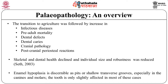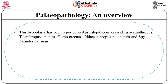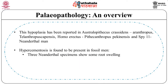Enamel hypoplasia is discernible as pits or shallow transverse grooves, especially in the canines and molars, with the tooth only slightly affected in most cases. This hypoplasia has been reported in Australopithecus crassidens, Paranthropus, Telanthropus capensis, Homo erectus, Pithecanthropus pekinensis and the Spy II Neanderthal man. Hypercementosis is found to be present in fossil men.